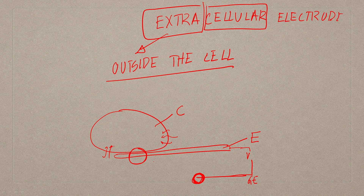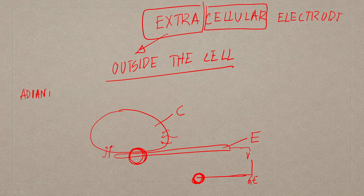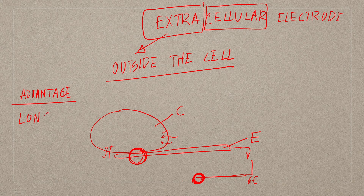The difference between the voltage of these two is what you are measuring. The advantage of the extracellular electrode is that you can do a long-term study because you are not damaging the cell.